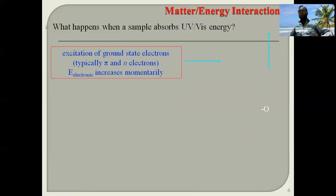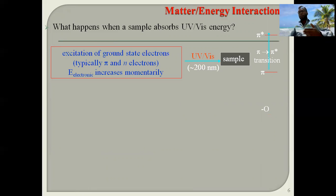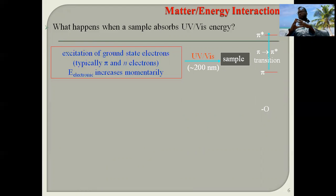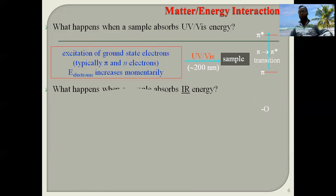When IR radiation interacts with a sample, recall that when UV light interacts with a sample, there is a transition of valence shell electrons from the ground state to higher energy states — specifically pi to pi* transitions or non-bonding to pi* transitions, as discussed in Chapter One.